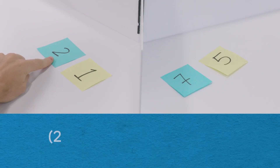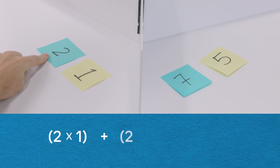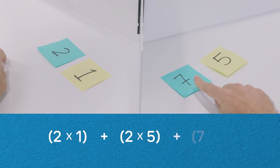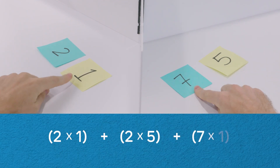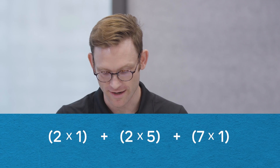To multiply your numbers, the three of us will each run a simple computation: blue left times yellow left, plus blue left times yellow right, plus blue right times yellow left. Just give me a second to work that out.